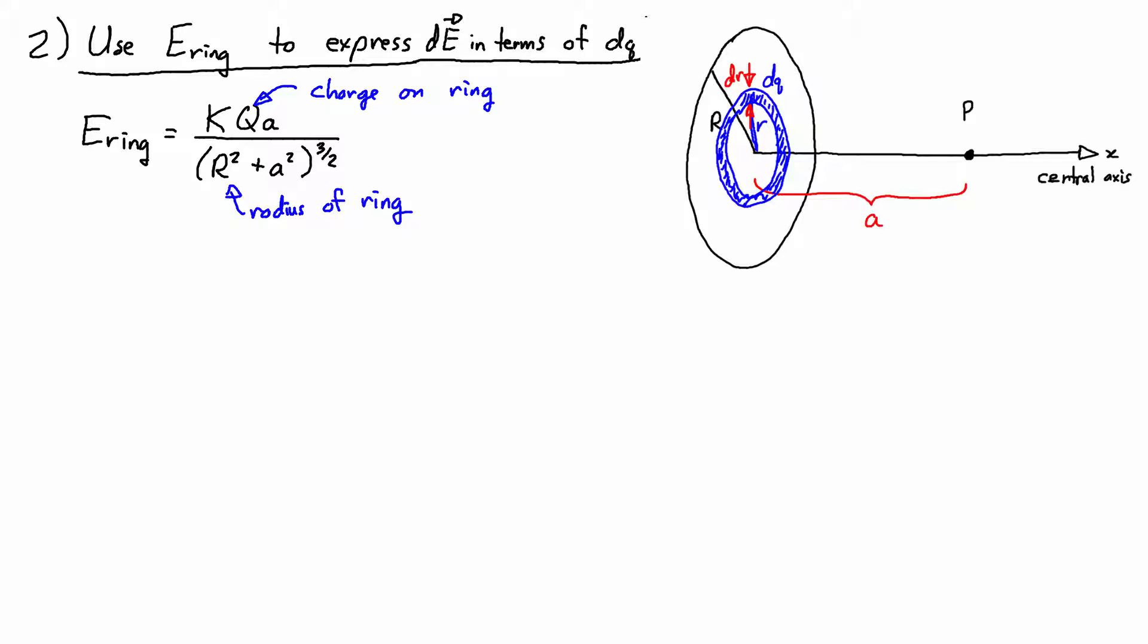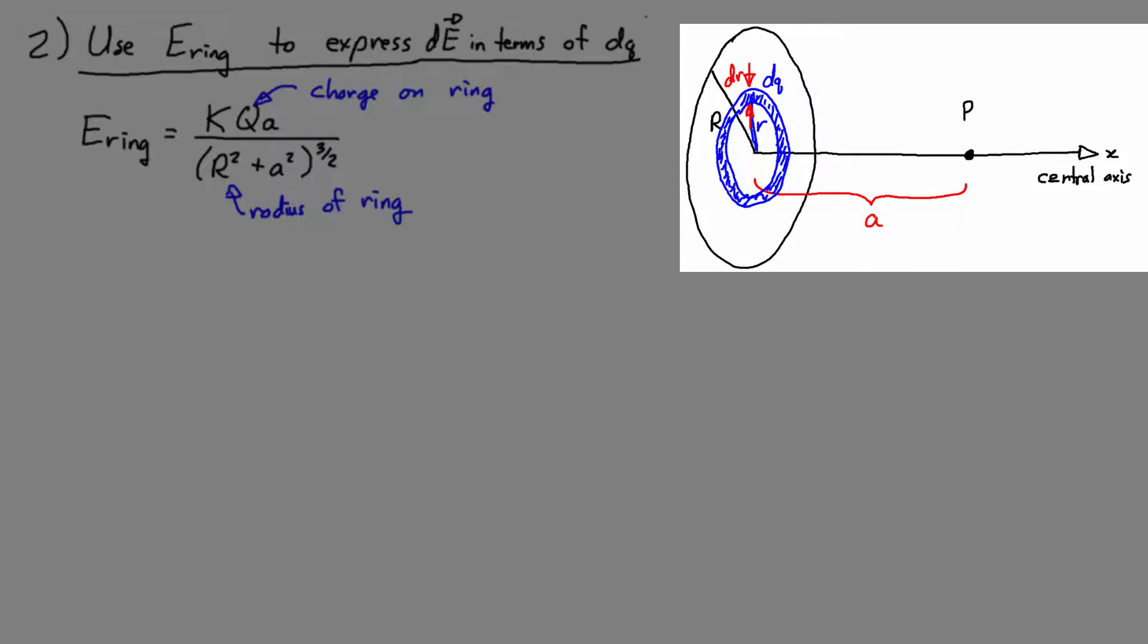And if you want to see a video where I derive this, then just check out the link in the description box. Now if you remember, the electric field from a ring was along the central axis. There were no components off of the central axis. So that means that in this problem, dE is actually pointing in the same direction as the x-axis. So it would have an i hat unit vector component.